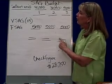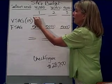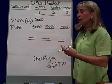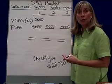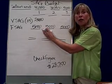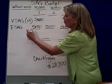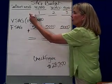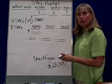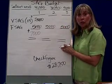So all I have to do is take 40,000 bottles sold times five cents, and that's $2,000 going to be allocated to variable selling, administrative, and general expenses. The fixed costs are fixed, and they're $5,000. So in total, for the first quarter, we're going to budget $7,000 in variable and fixed selling, administrative, and general expenses.